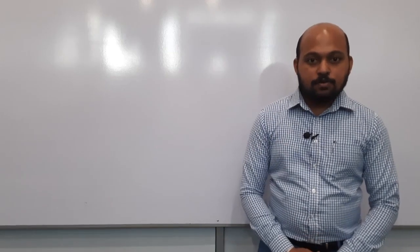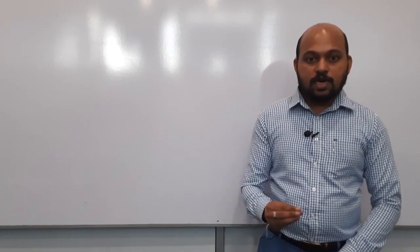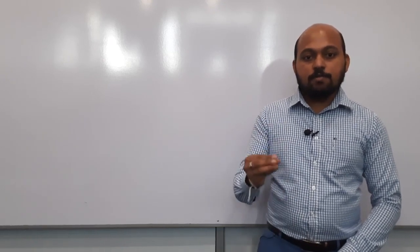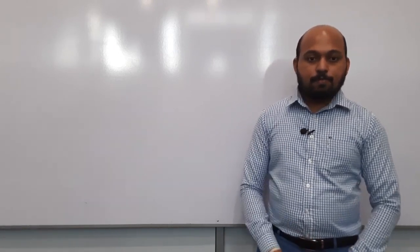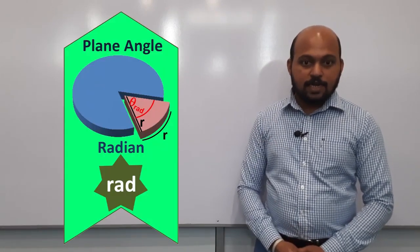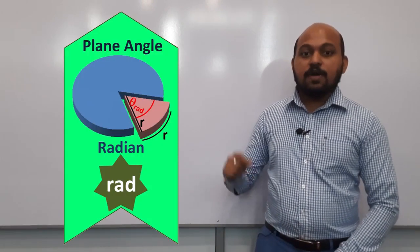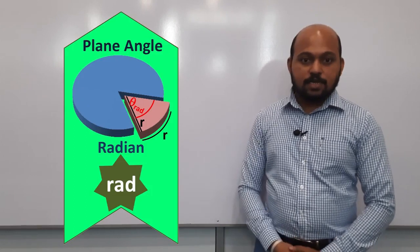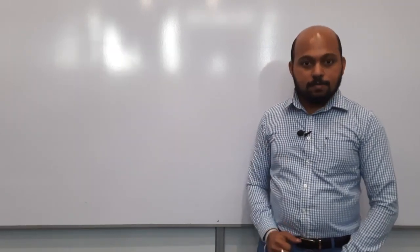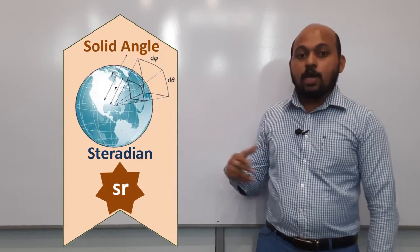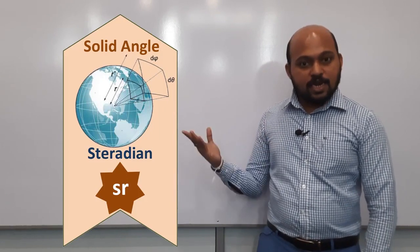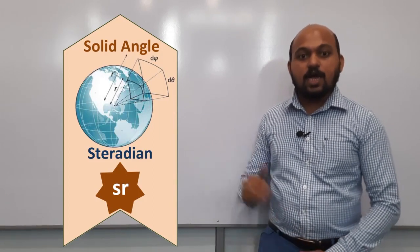There are two supplementary units in the SI system. Let us consider those quantities and their symbols and units. The first supplementary unit is plane angle, unit radian, symbol RAD. The second supplementary unit is solid angle, unit steradian, symbol SR.